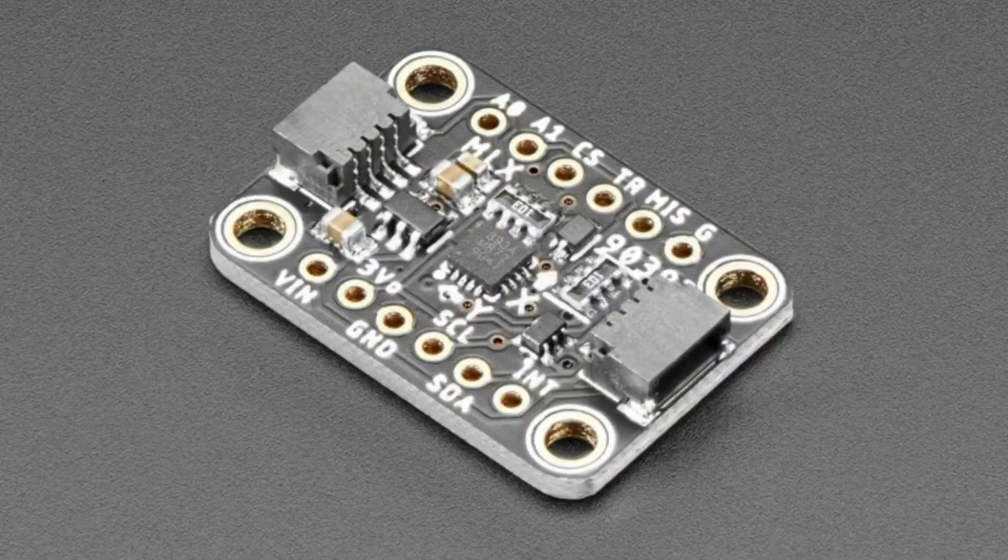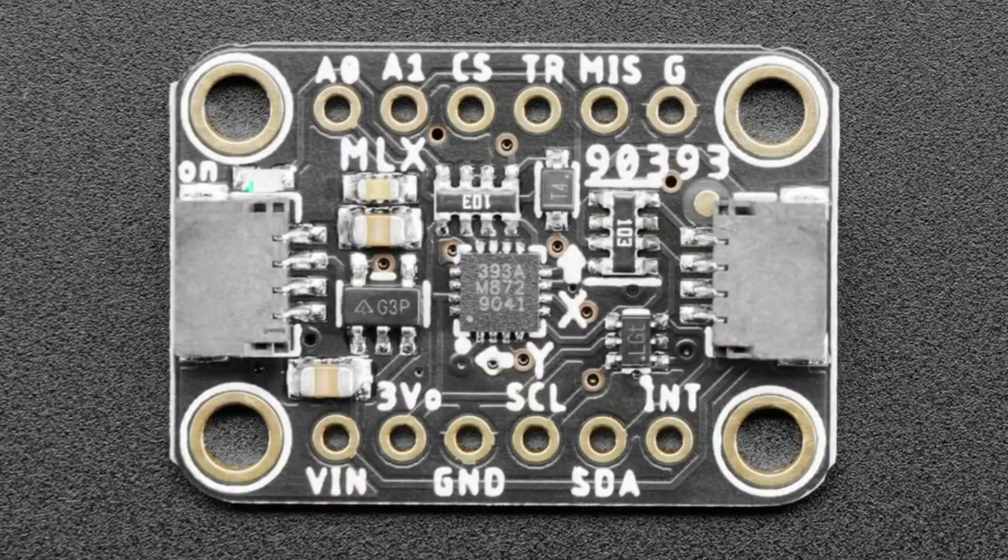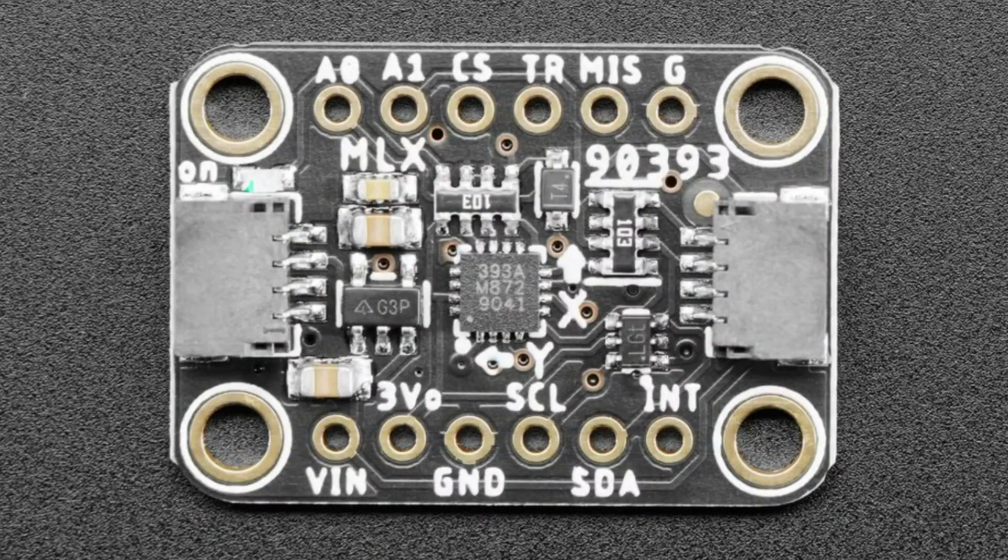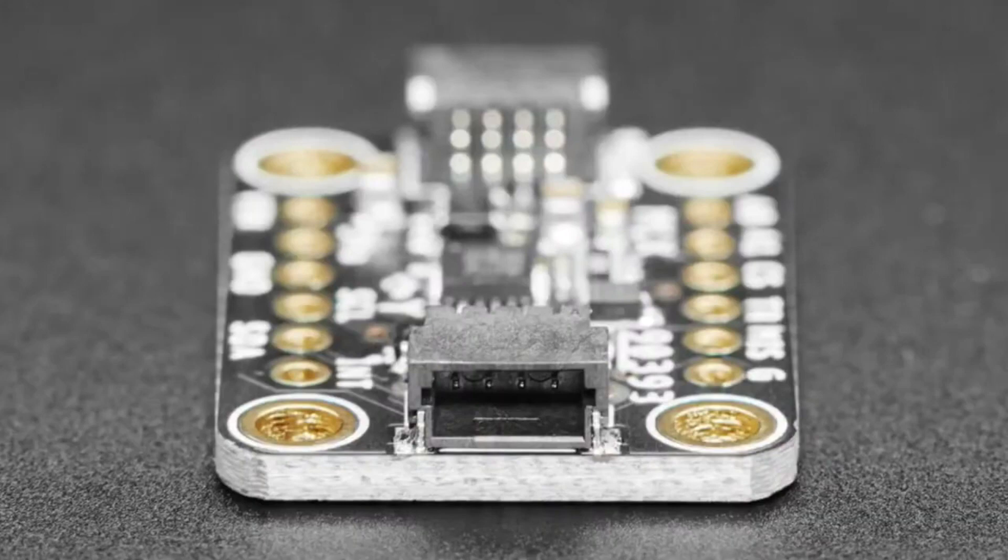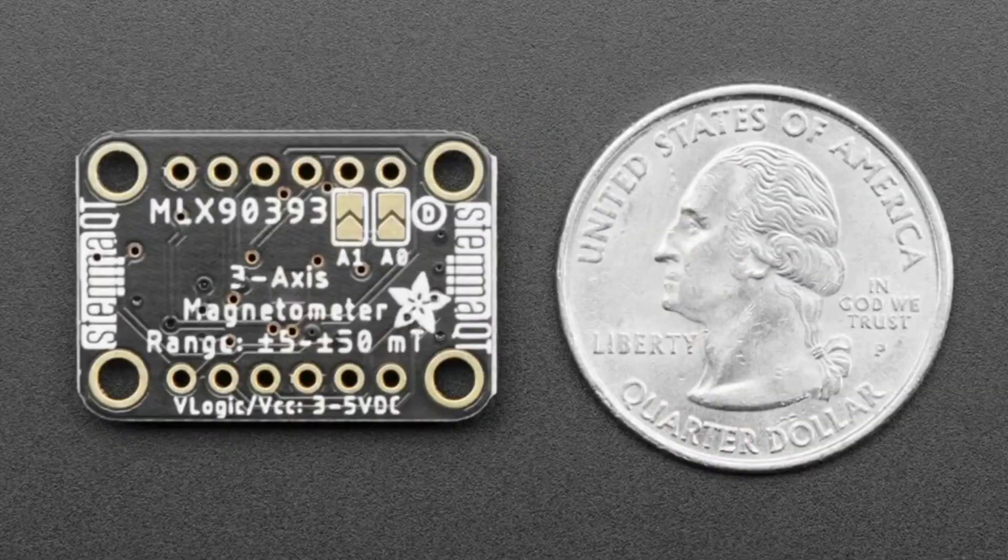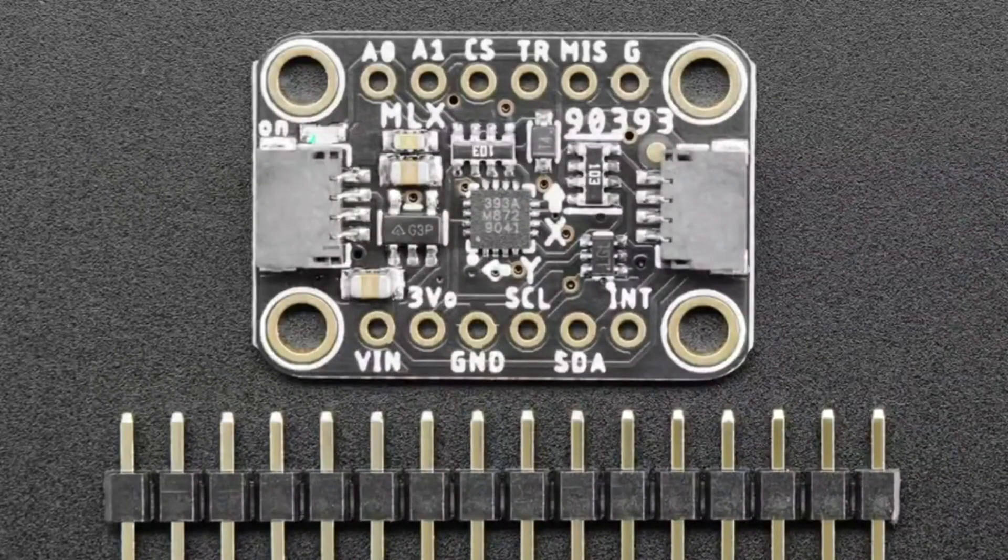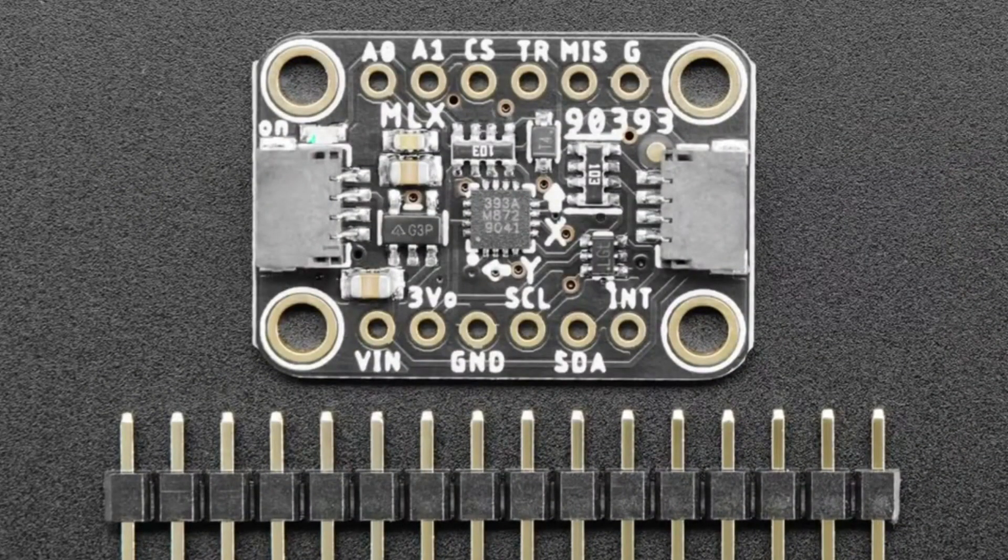Whereas most magnetometers I think top out at like ten or something, so this is really good for high magnetic field sensing. We've just updated this to be STEMMA QT compatible. We have code already for Arduino and CircuitPython and Python. It's just now plug and play, really easy to use and in our standard STEMMA QT size and format.